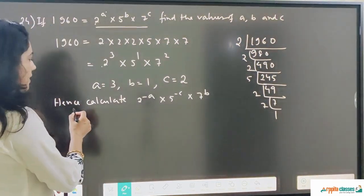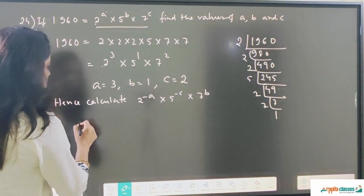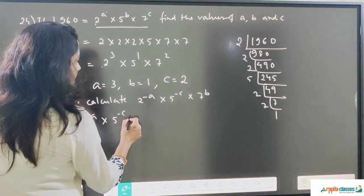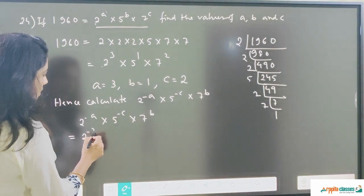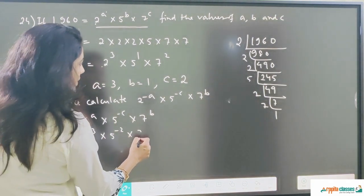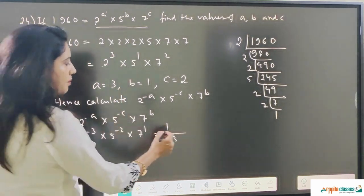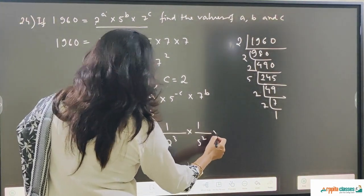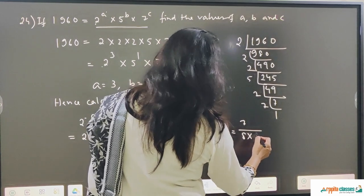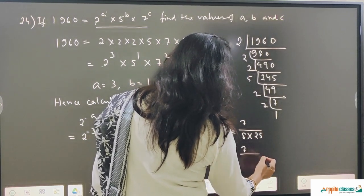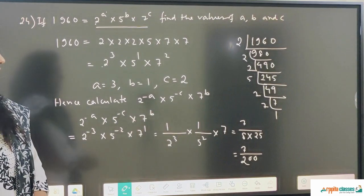The question is further extended: calculate 2 to the power minus a into 5 to the power minus c into 7 to the power b. Substituting values: 2 to the power minus 3 into 5 to the power minus 2 into 7 to the power 1. So 2 to the power minus 3 is 1 upon 2 cubed, 5 to the power minus 2 is 1 upon 5 squared, and it is 7. This gives 7 divided by 8 times 25, which is 7 divided by 200. So the answer for this question is 7 upon 200.